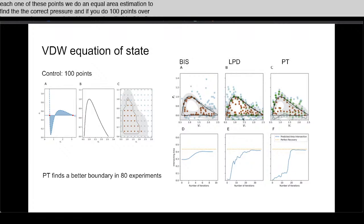We get much better looking boundaries in fewer experiments, maybe 20% fewer experiments in this case by choosing these points along here.